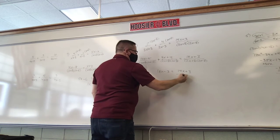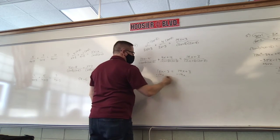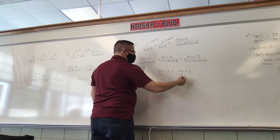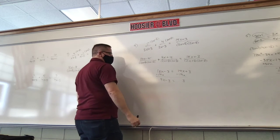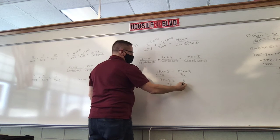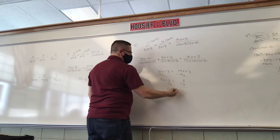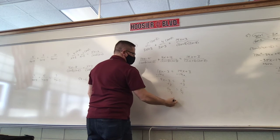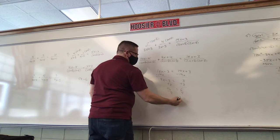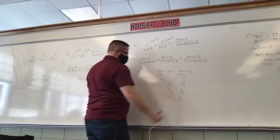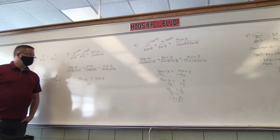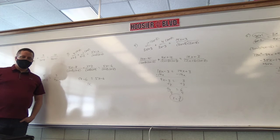Subtract 14x from each side. We have 4x minus 3 equals 3. Add 3 to each side. 4x equals 6. Divide by 4. x equals 6 over 4, which is 3 over 2. Now, we're sitting there thinking we're done — but we're not.